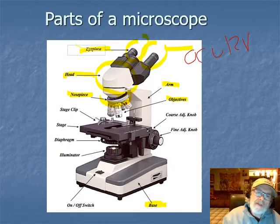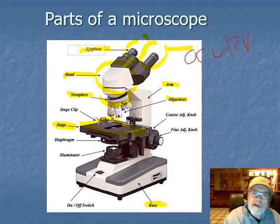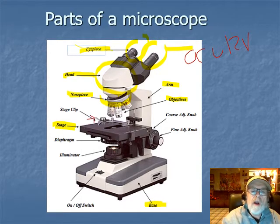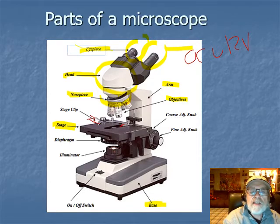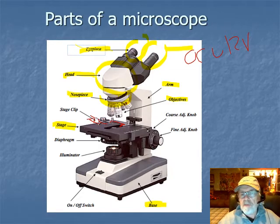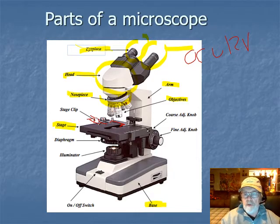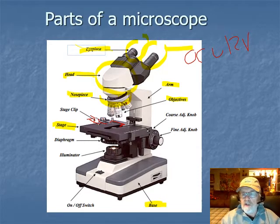The next part down on the arm is called the stage - this large platform is where you put the slide. The slide goes into what's called a slide clip. You pull the tab back, which swings a bar backwards, put the slide in and lock it in the corner, then let go and it locks the slide in place. That way the slide isn't moving around on the stage when you move the stage around.